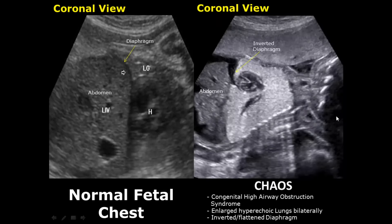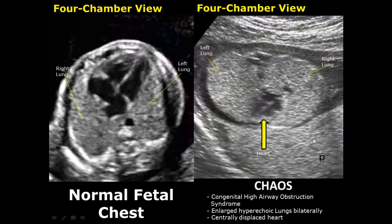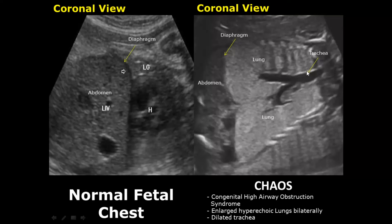CHAOS stands for congenital high airway obstruction syndrome. Both lungs will be enlarged and hyperechoic, causing inversion or flattening of the diaphragm. Here you can see the diaphragm is inverted because the lungs are enlarged. In the four-chamber view, the lungs are enlarged bilaterally and have displaced the heart towards the center of the thorax. In CHAOS, the trachea can also be dilated — here we can see hyperechoic lungs along with a dilated, fluid-filled anechoic trachea.